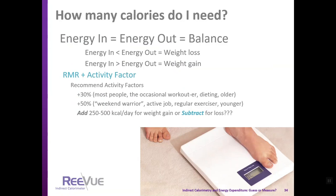Once results are obtained, the question is: how many calories do I need? Energy in should equal energy out for energy balance. Typically, an activity factor is added to the RMR — this is the challenge, since the RMR measurement is very exact but the activity factor is estimated. A 30% addition is used for most clients; for very active individuals with active jobs or regular exercise, 50% may be added. For weight gain or loss, 250–500 calories per day can be added or subtracted, but clients should be monitored to ensure accuracy.